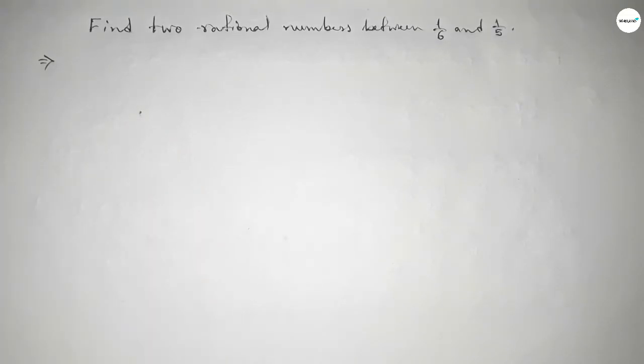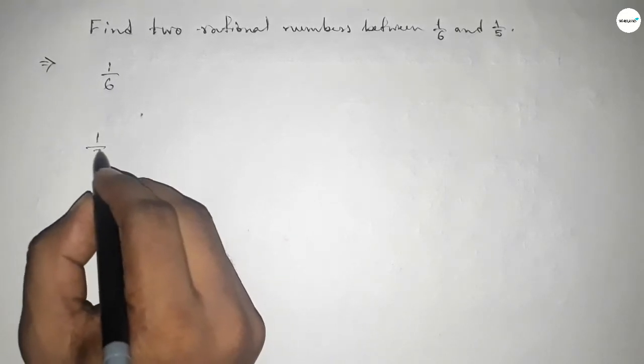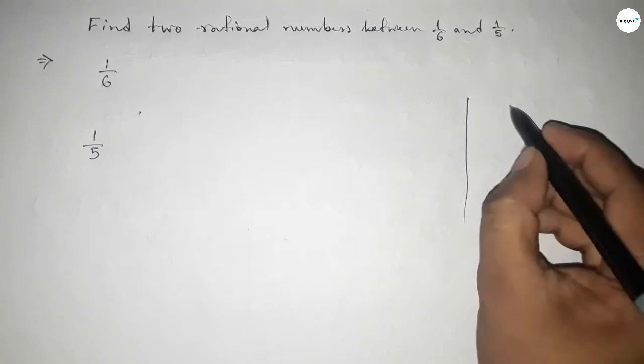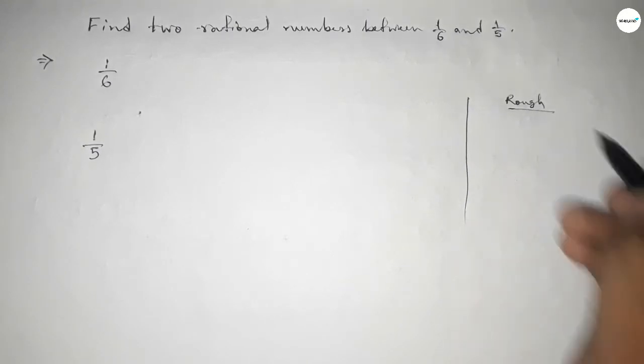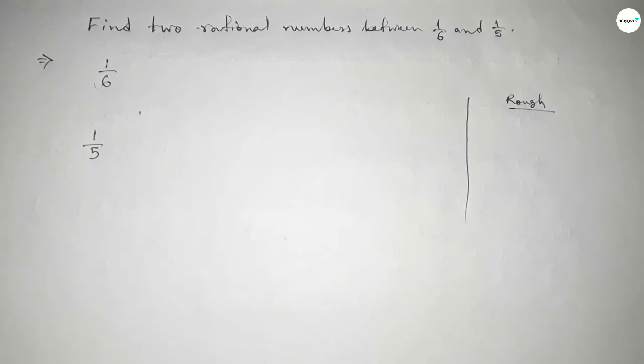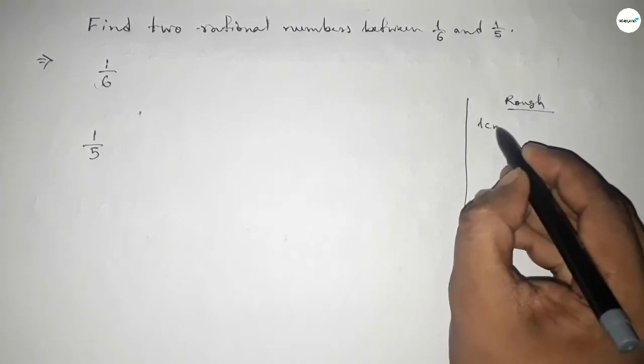First of all, write down the given numbers: 1/6 and 1/5. Now, the denominators of both are not equal, so first we have to find out the LCM of 6 and 5.